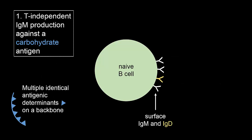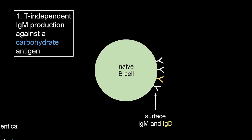A typical large carbohydrate is made up of repeating sequences of a few simple sugars, so it can have multiple copies of identical antigenic determinants. When it binds to an anti-carbohydrate naive B cell, many determinants bind the surface IgM and IgD receptors. The backbone of the carbohydrate forces strong clustering of the immunoglobulins, providing a signal that is strong enough for B cell activation.